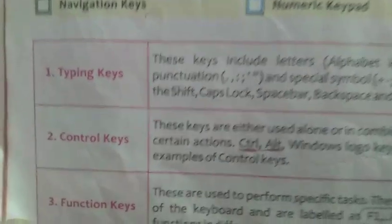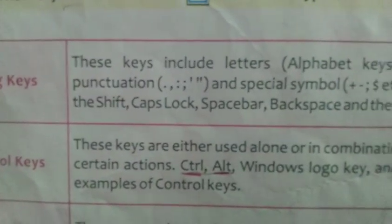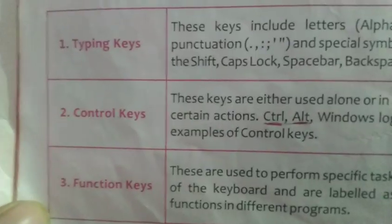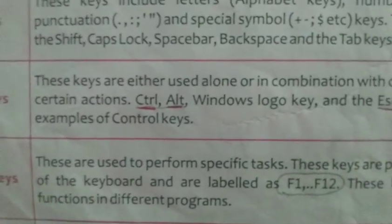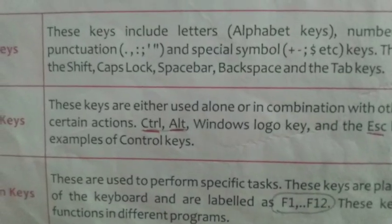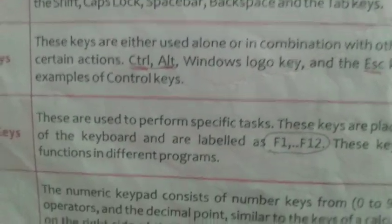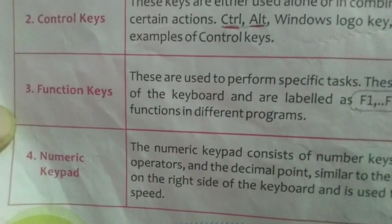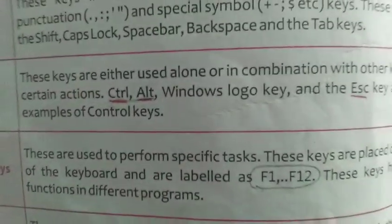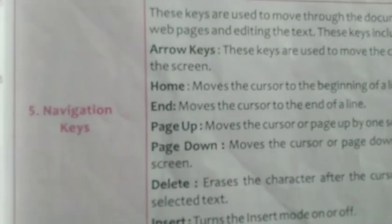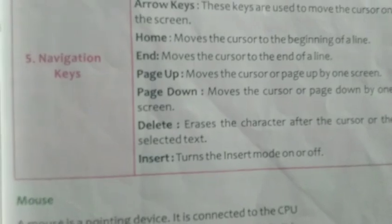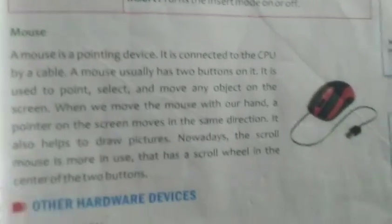The second type is control keys — these include Ctrl, Alt, Win, and logo keys. Next are the function keys, labeled F1 to F12 on your keyboard. Then there are the numeric keys, where numbers are written. Finally, navigation keys include all the arrow keys, Home, End, Page Up, Page Down, Delete, and Insert.